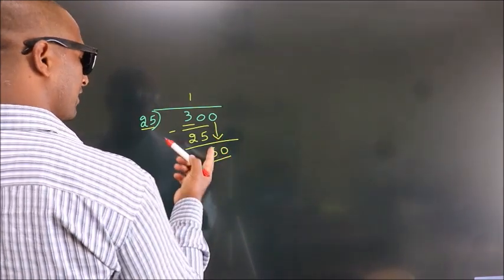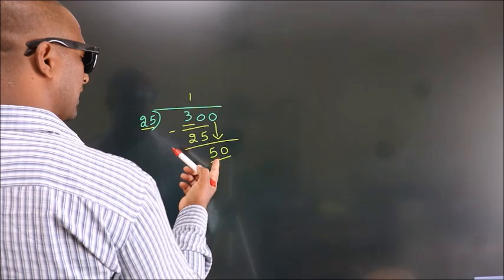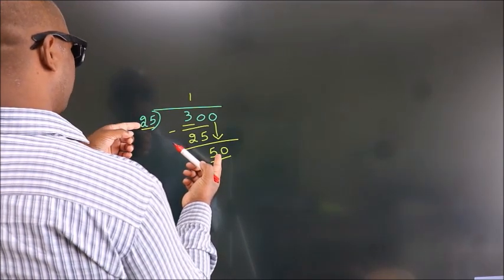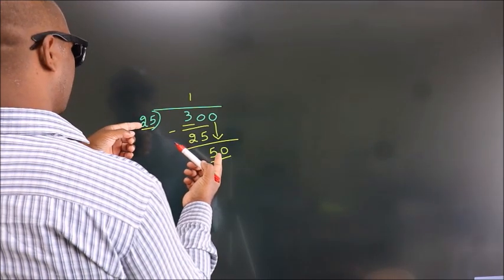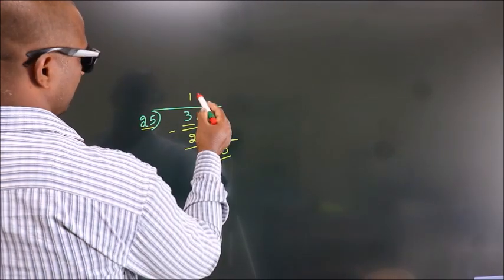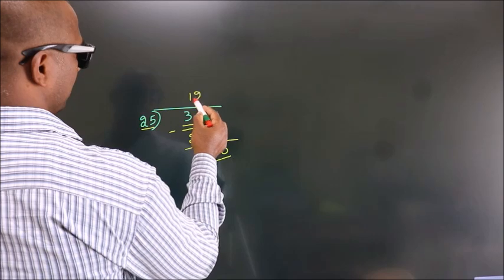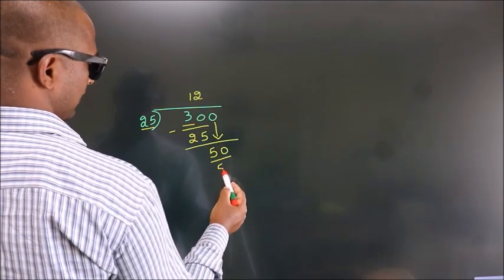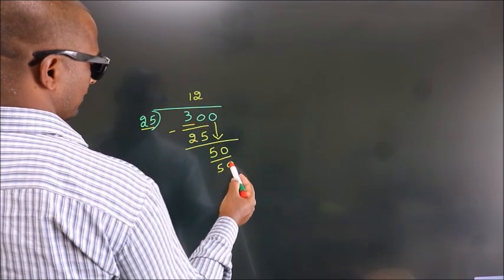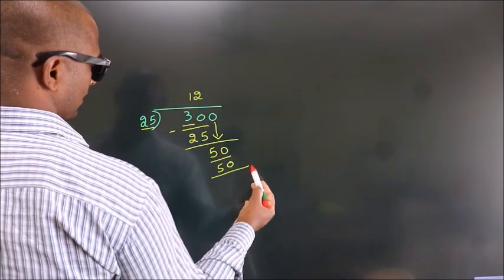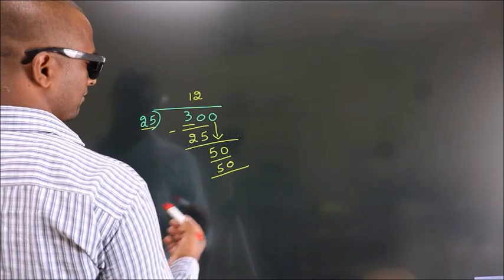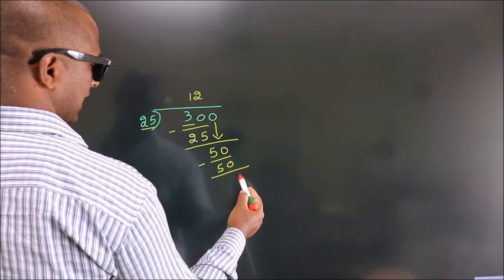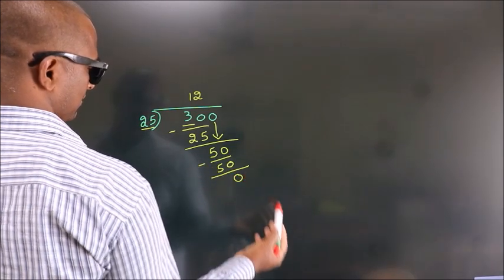When do we get 50 in the 25 table? 25 times 2 is 50. Now we subtract. We get 0.